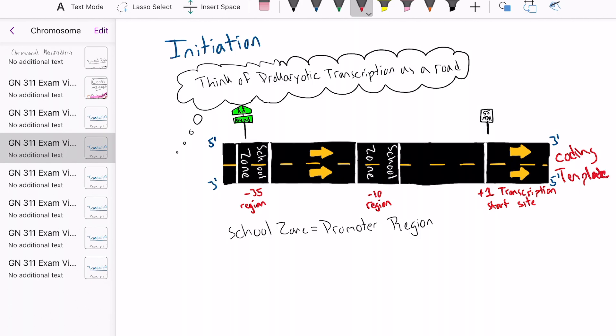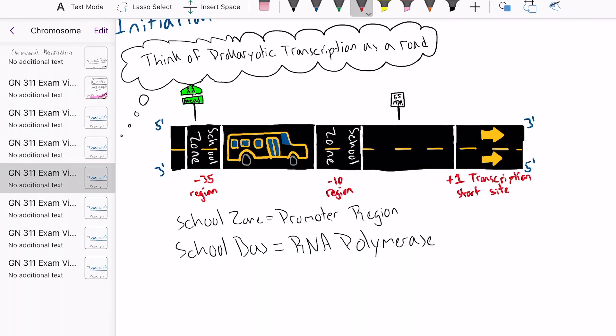Similar to a school bus finding a school zone, the RNA polymerase will find the promoter region and bind to it. It is also important to note that a school bus without a school driver is pretty useless, just like RNA polymerase without a sigma factor.